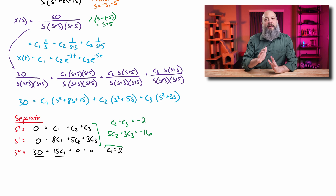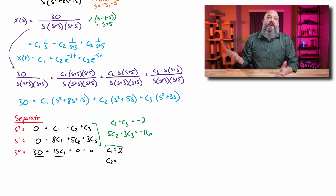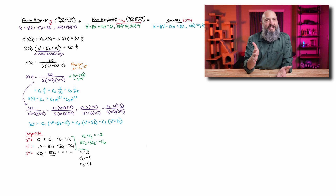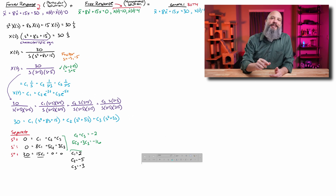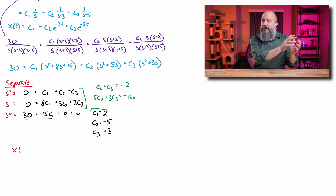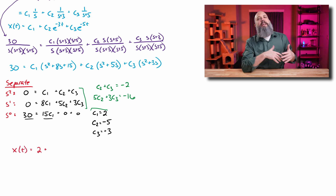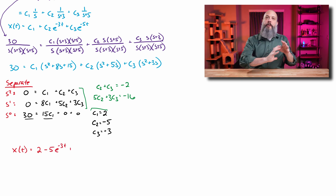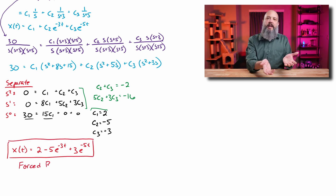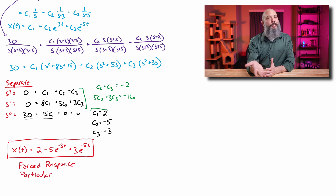Using the system solve on my TI-36X Pro with C1 equal to 2, I get C2 equals negative 5 and C3 equals positive 3. Since I already found the form of the final answer, I plug in these coefficients to get 2 minus 5e to the negative 3t plus 3e to the negative 5t. This is the forced response — we included the 30 which was the forcing function, and we ignored initial conditions. In math classes, they call this the particular solution.